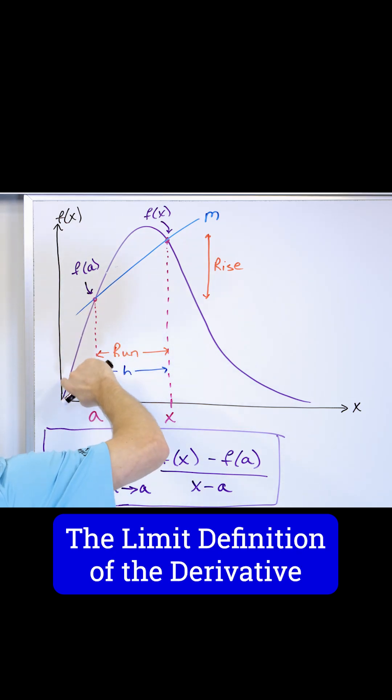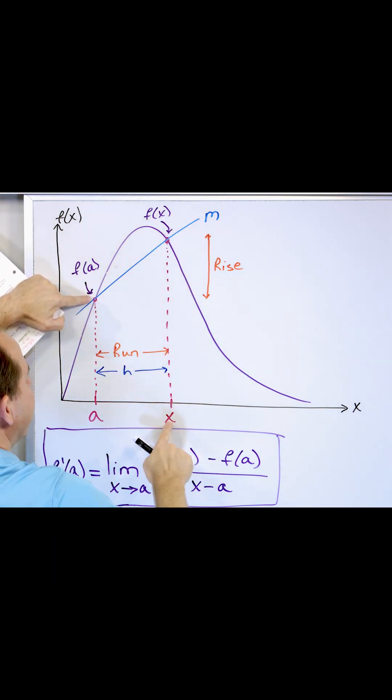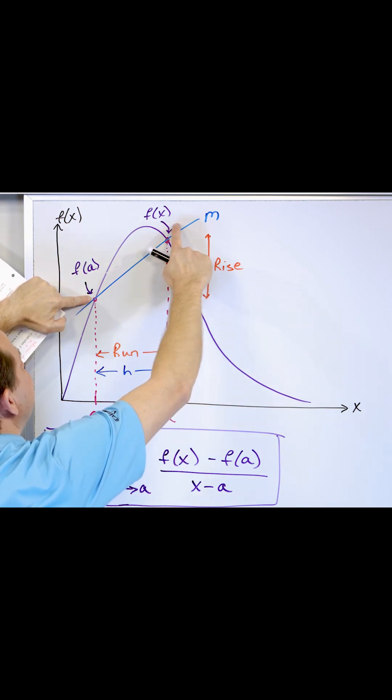All you're doing is if you have a point here on the original purple curve, you want to figure out what the slope of the line tangent is here. All you do is you use this point and a point far away, which we call f of x, because this is x and this is the point of interest a.